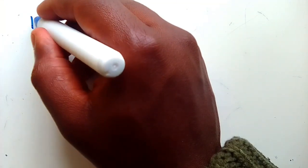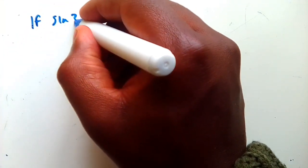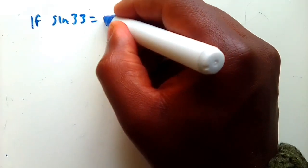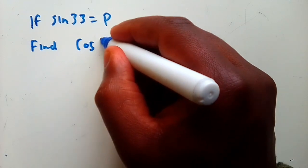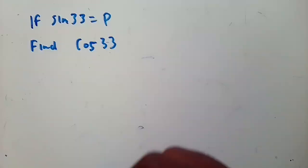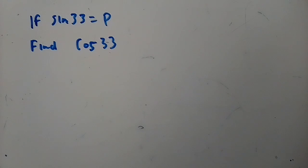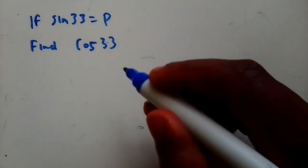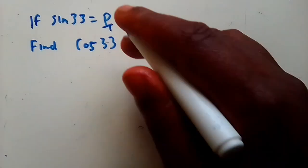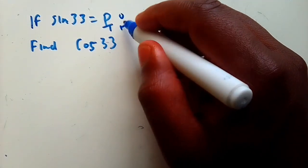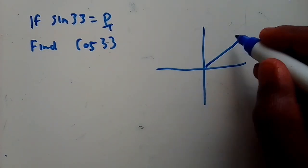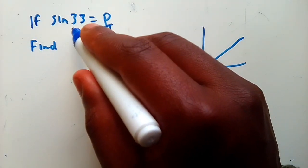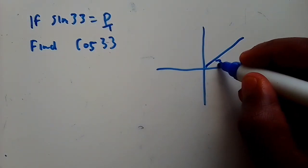Let's start from the basics, then we'll go to the highest levels. Let's say sin 33° = p — find cos 33°. So first of all, p is the same as p over 1. Sin is opposite over hypotenuse, so we draw a triangle. It's going to be in the first quadrant because we're given an acute angle, so this angle is 33°.